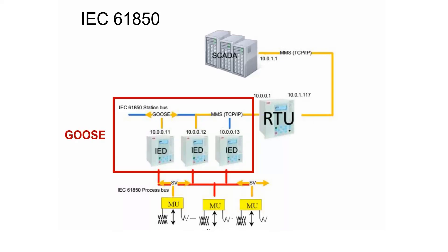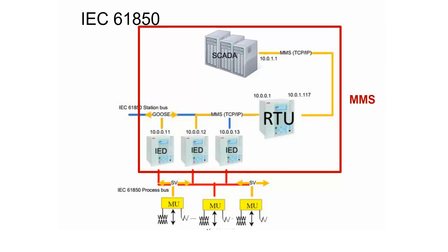At the middle level, we have the station bus, and GOOSE protocol is used here to communicate when events happen on the substation between the IEDs — for example, a trip event or something like that. On the top level, we have RTUs and SCADAs that communicate through MMS to the IEDs. It uses TCP/IP protocol to check the configuration of the IEDs, change the configuration, and read the values.